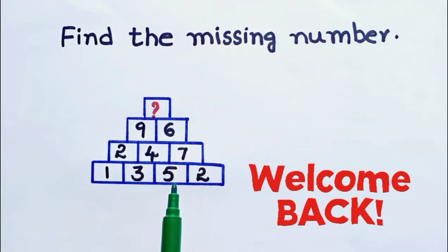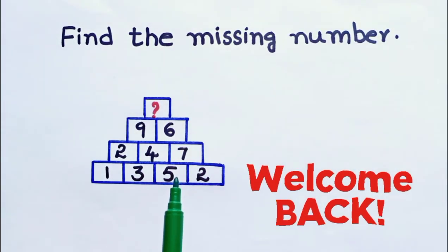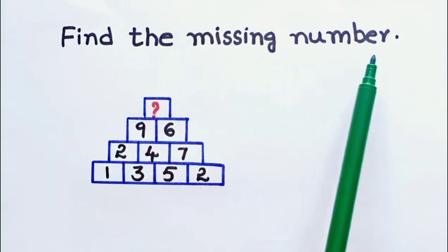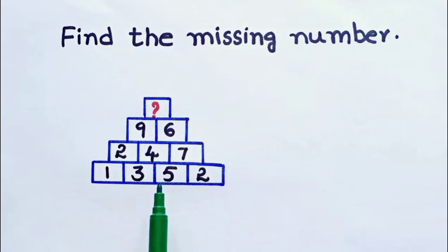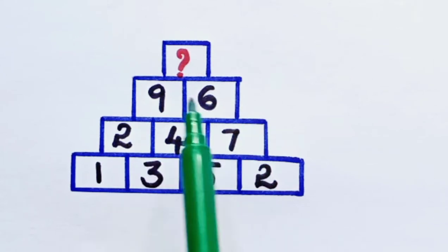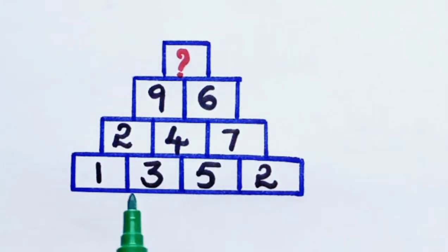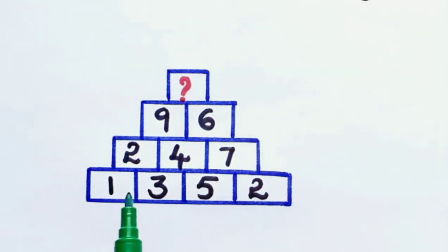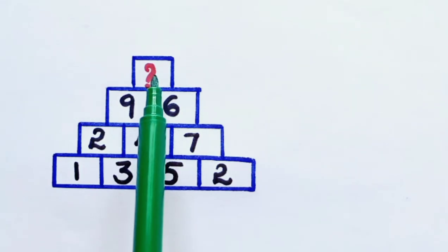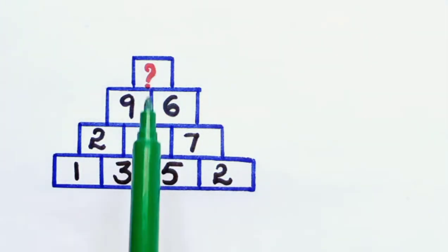Hello everyone, welcome back to teaching and learning STEM concepts. Today in this video we are going to find out the missing number in a given math puzzle. Children, look at the problem — we have four different rows in which a series of numbers are given in horizontal rows, and we need to find out the missing number in the given space.